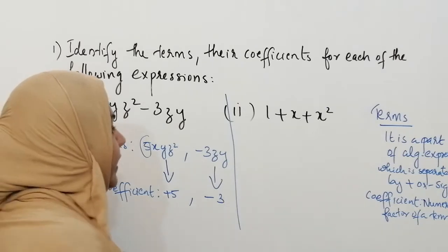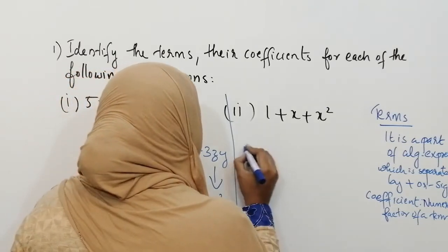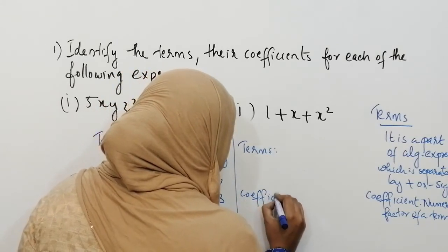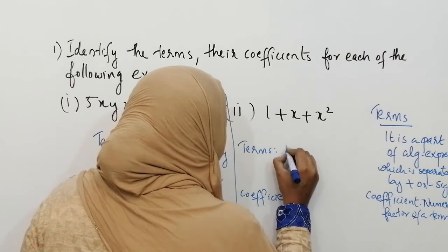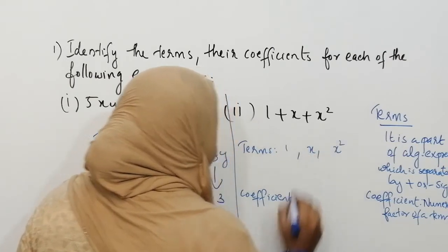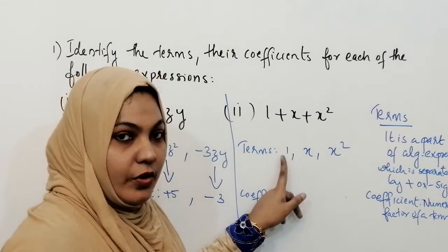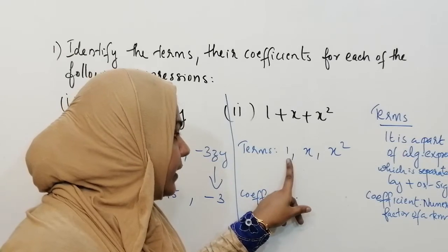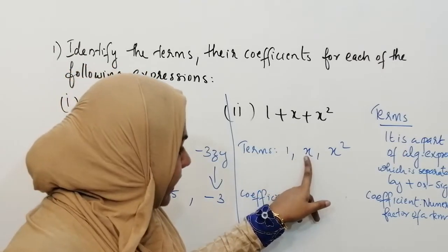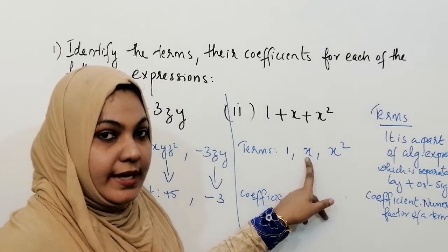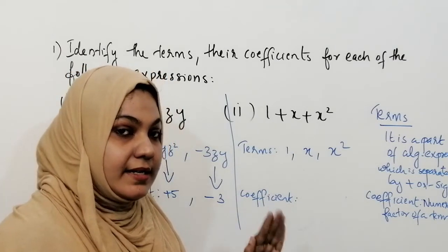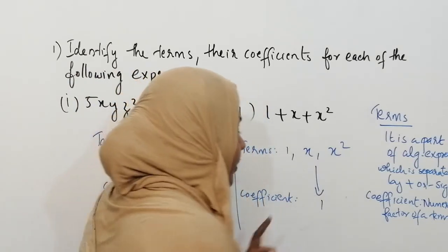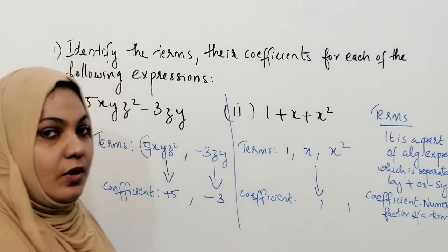We can now solve the second question. Here you can see there are three terms: 1, x, and x². The first term is 1 — here you cannot see any coefficient because coefficient means the number multiplied with a variable; this is a constant, not a coefficient. The coefficient of x is 1 because x means 1 multiplied by x. The coefficient of x² is also 1, because 1 into x² equals x².